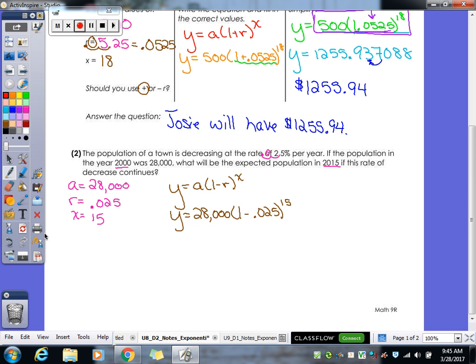So again, figure out the stuff in the parentheses first. So do your 1 minus your 0.025 first. What do we get? 0.975. Now you see this time how this number is less than 1? That's our hint that this is decay. That number is less than 1. Now go ahead and type that whole thing in. 28,000 parentheses 0.975 to the 15th power.